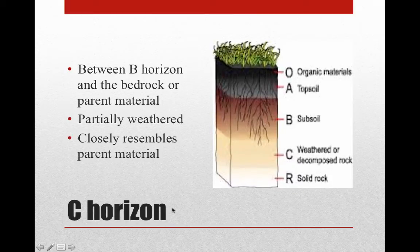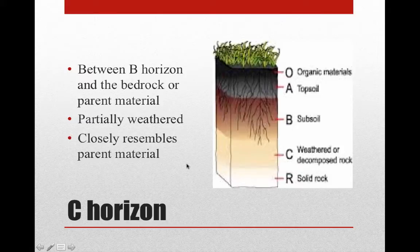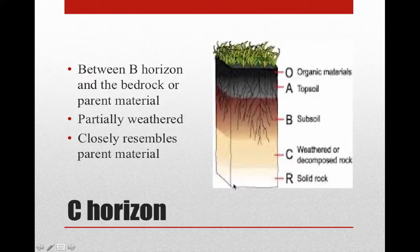The C horizon sits between the subsoil and the bedrock, often called the R layer. The C horizon is only partially weathered — some of it may still resemble bedrock — and it closely resembles the parent material. This C soil is being weathered from the solid rock below, so these two layers are very closely related.